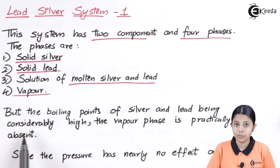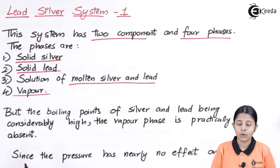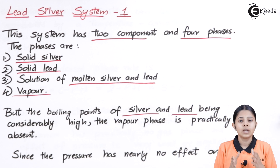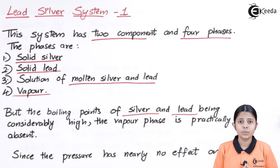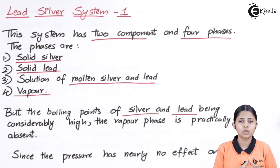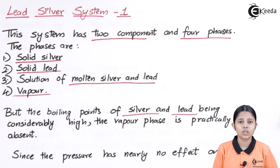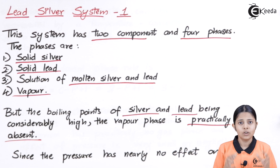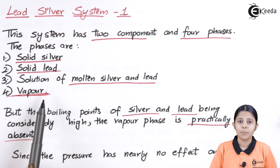However, the boiling points of silver and lead being considerably high, the vapor phase is practically absent. We commonly see silver in its solid form. Melting it to liquid requires extremely high temperatures, and converting that liquid to a gaseous form requires temperatures that are practically unattainable. Therefore, the gaseous form can be neglected in practice. Theoretically it exists, so we include it in the four-phase system, but experimentally it is absent.